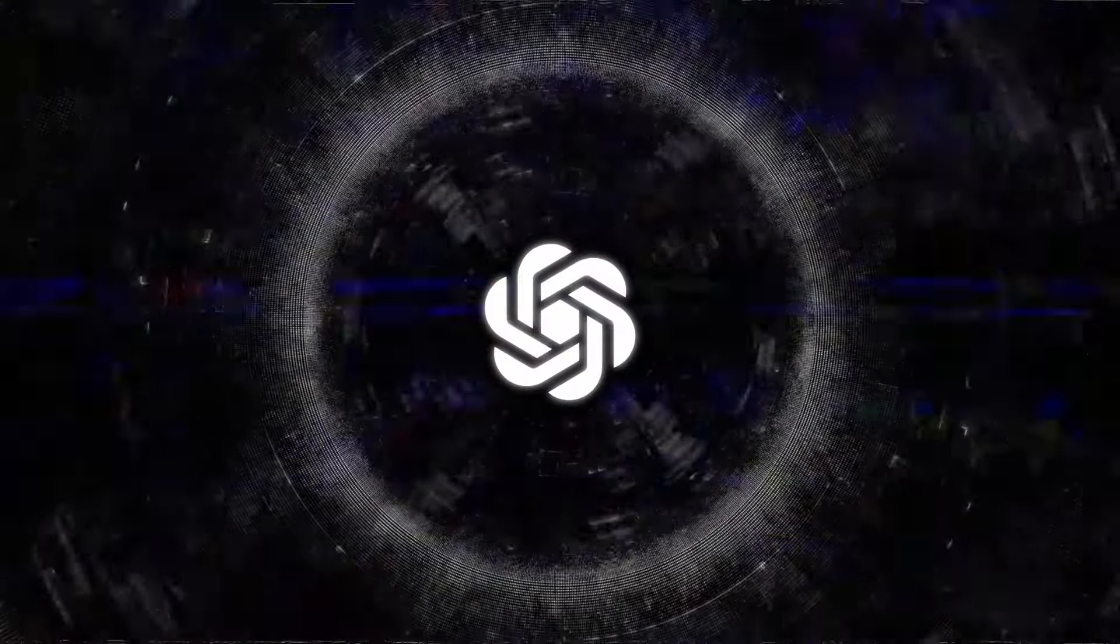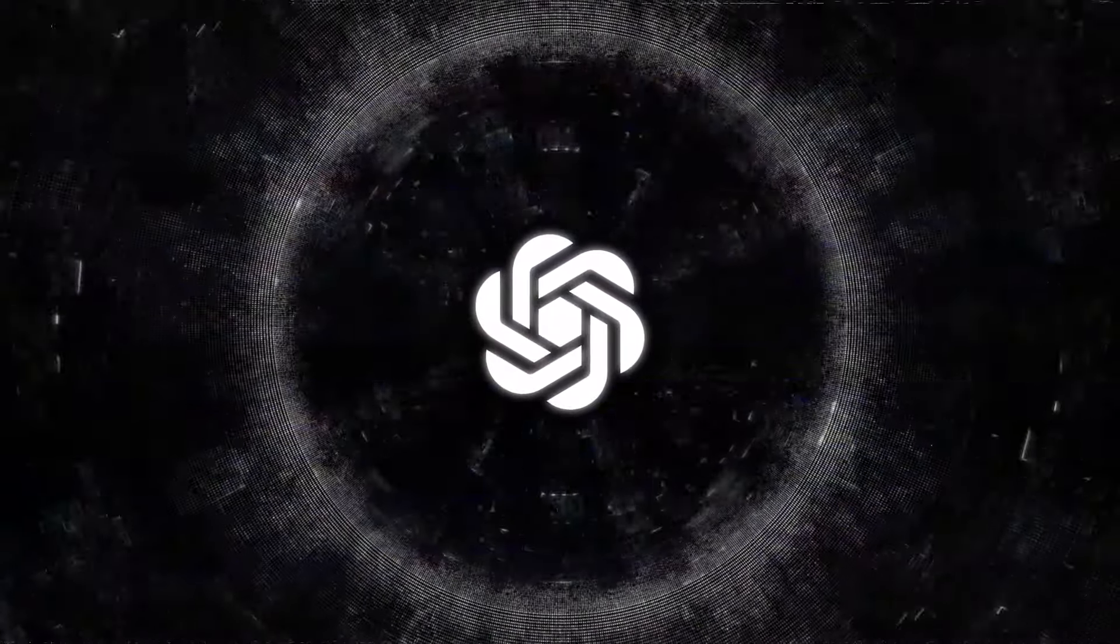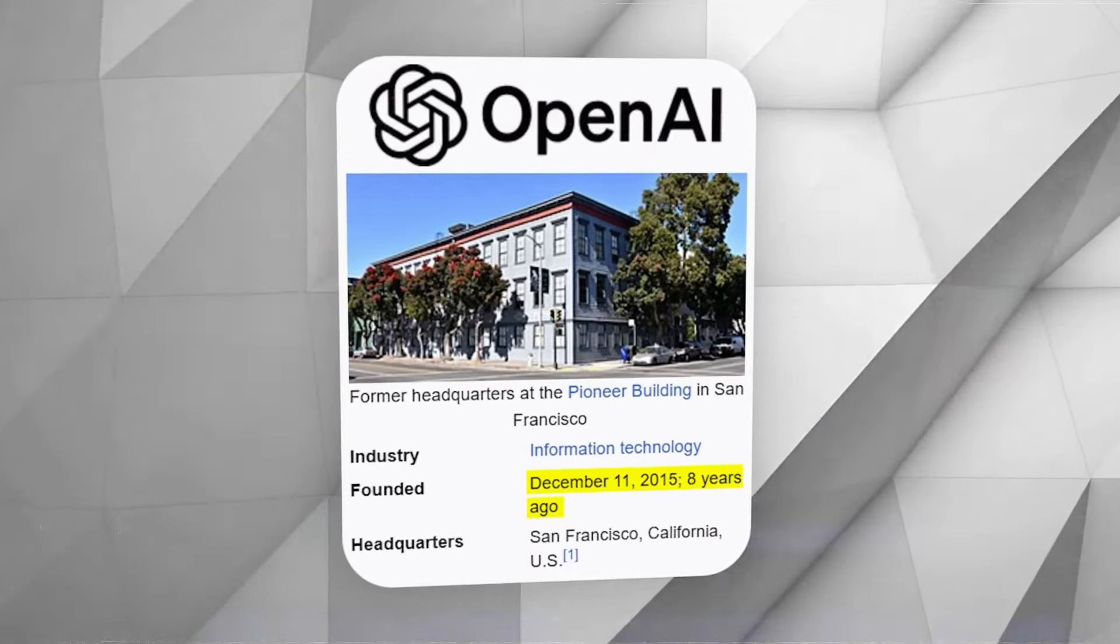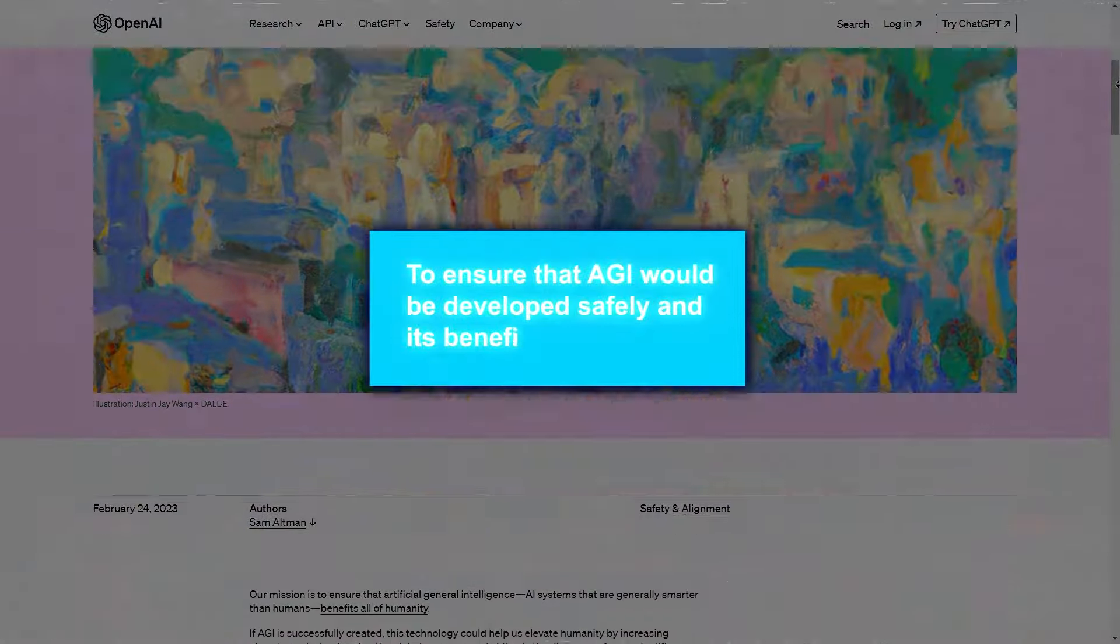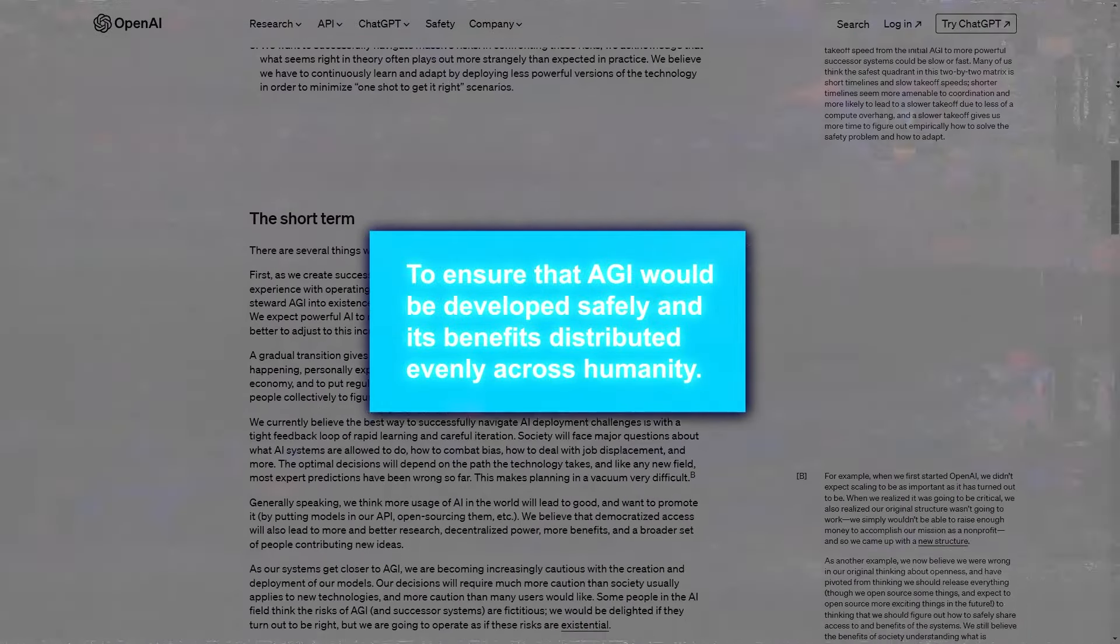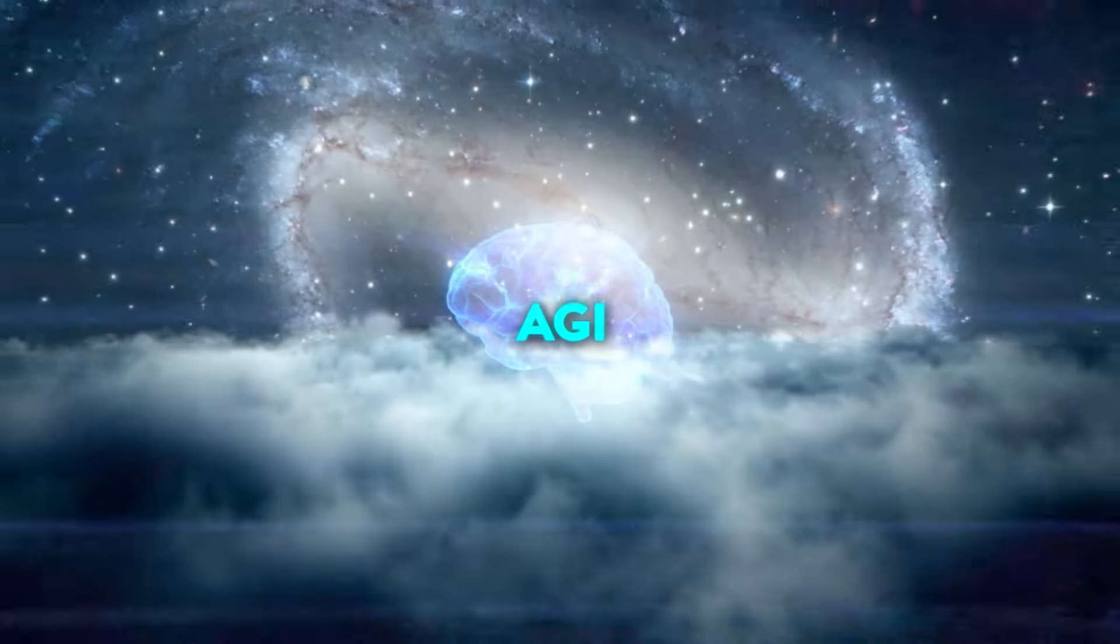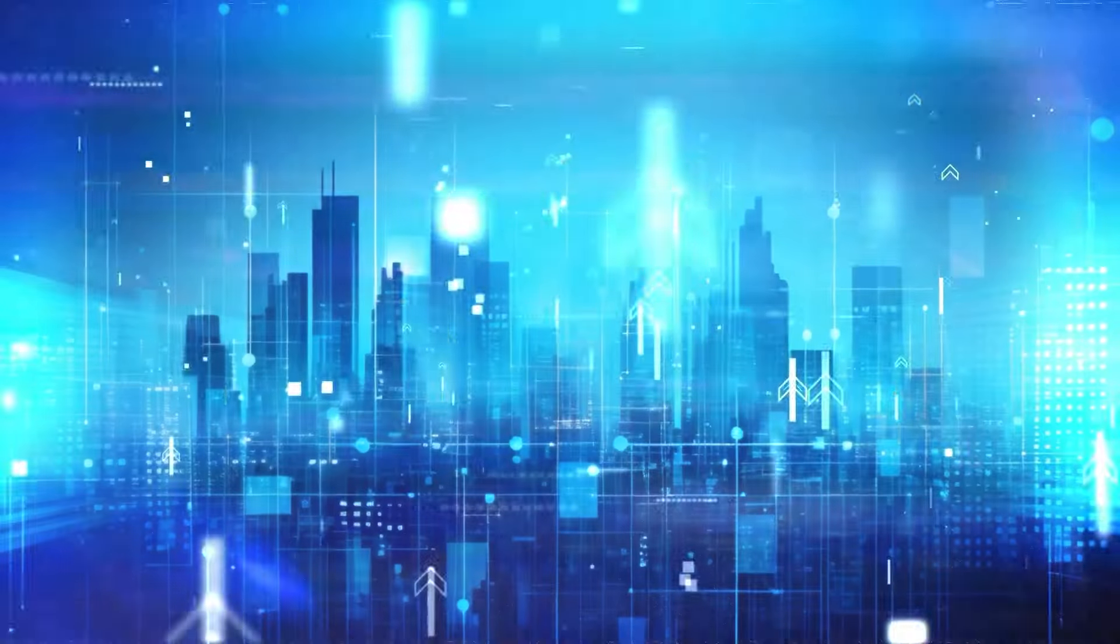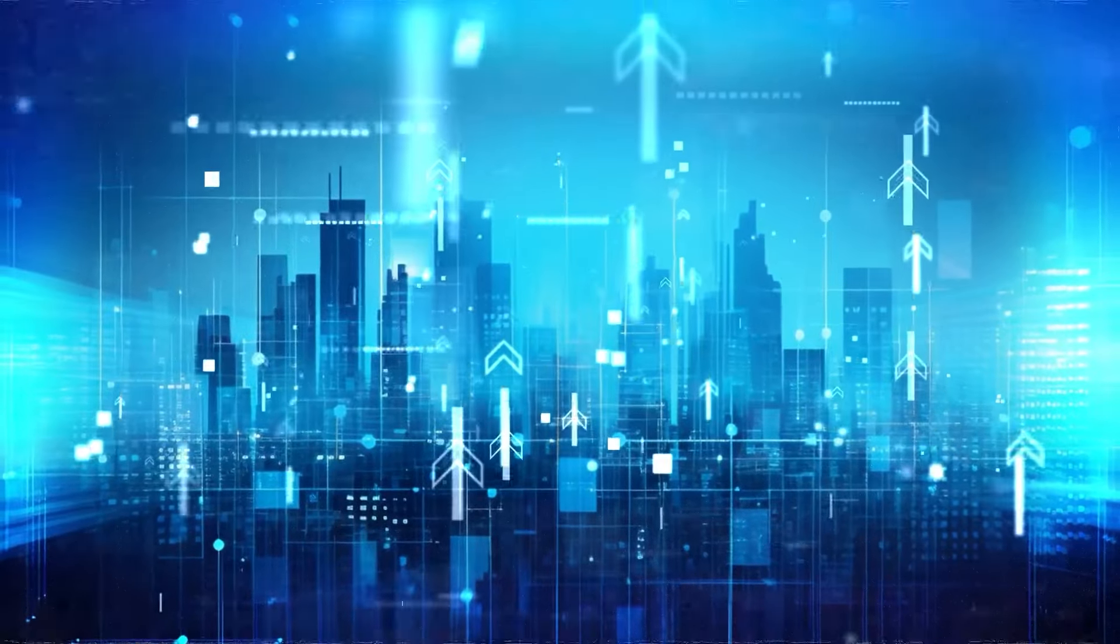Now, let's dive a bit deeper into this transformation of OpenAI. When OpenAI was founded, it was heralded as a beacon of hope in the AI world. Its mission was clear and noble, to ensure that AGI would be developed safely and its benefits distributed evenly across humanity. The dream was big, AGI as a common good, not a commercial weapon. But fast forward to today, and the landscape looks dramatically different.